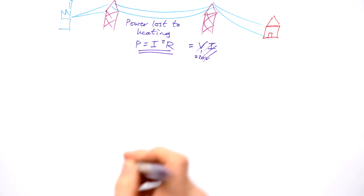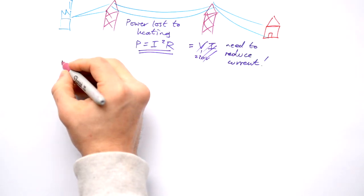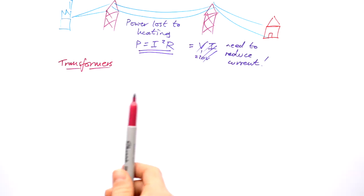So we need to reduce the current. How do we do that? Well, we do that with transformers. Now when you look at a transformer, it might just look like a big box, but with transformers, there's actually more than meets the eye.